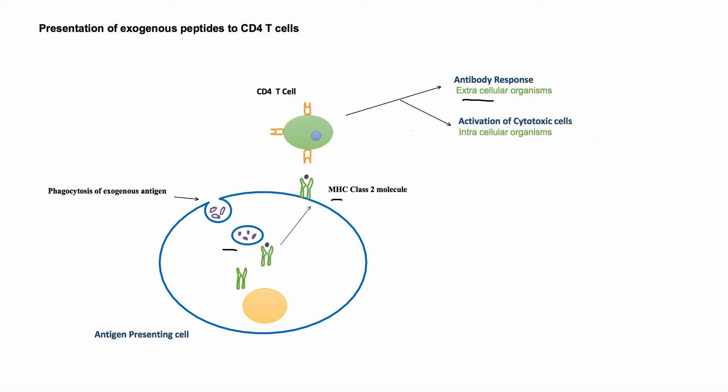B cells then interact with CD4 T cells. This resulting interaction leads to proliferation of B cells, class switching of immunoglobulin molecules, and formation of plasma cells and memory B cells.